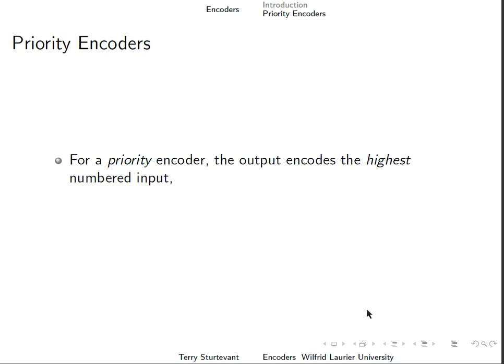For a priority encoder, the output encodes the highest numbered input, regardless of the state of the lower numbered inputs.